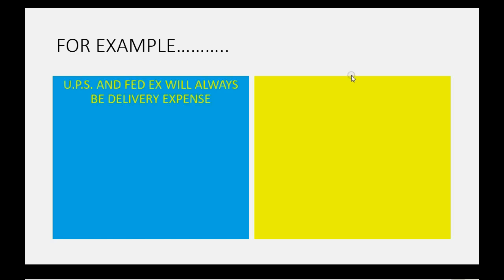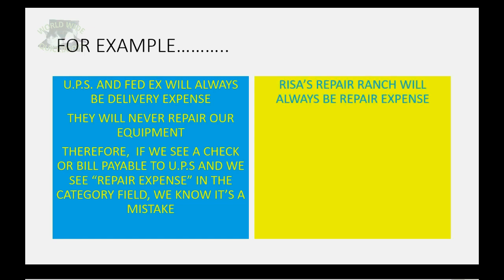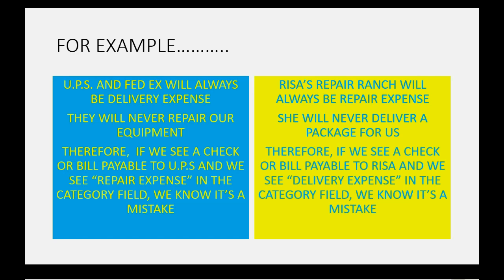For example, UPS and FedEx will always be delivery expense — they will never repair our equipment. Therefore, if we see a check or bill payable to UPS and we see repair expense in the category field, we know it's a mistake. Conversely, Risa's Repair Ranch will always be repair expense in every transaction we record with Risa — she will never deliver a package for us. Therefore, if we see a check or bill payable to Risa and we see delivery expense in the category field, we know it's a mistake.